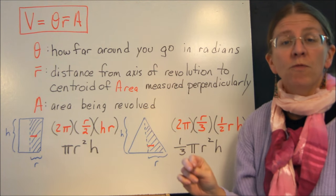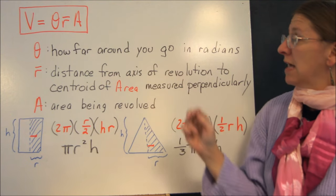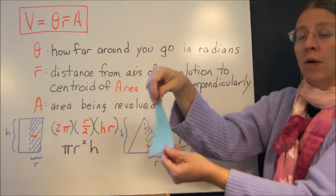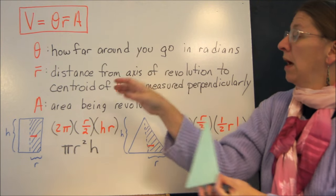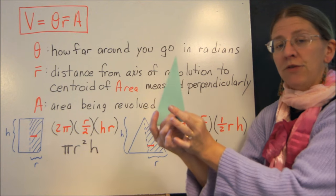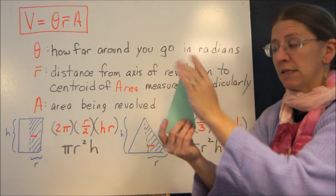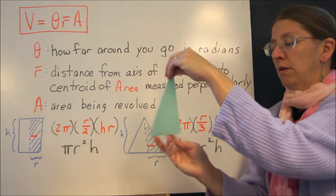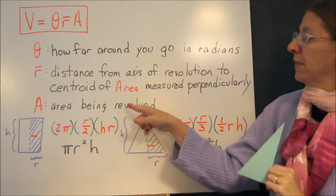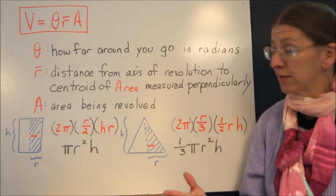This is the formula for Pappas and Gildanus. Theta is how far around you go. It has to be in radians. So if I go all the way around, I'm dealing with 2π. R is the distance from the axis of revolution to the centroid of my shape. So always measure perpendicularly from this axis that you're revolving around to the centroid of your shape. And A is going to be the area that you're actually revolving, just in length squared.